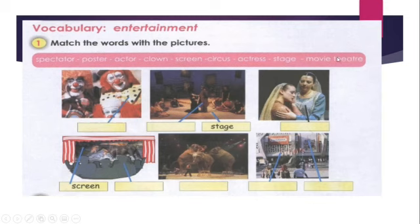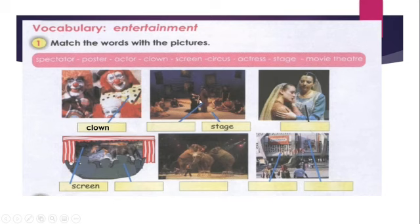Now look at the words and tell me what this picture is about — who is this person? It's a clown. Now we are in a theatre — who is this person? Look at the words. Actor — very good. Actor is masculine, male. What about female? We write actress.